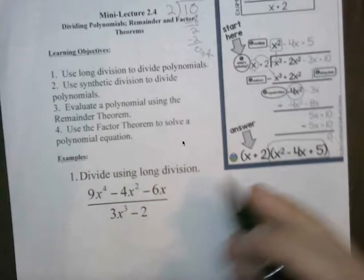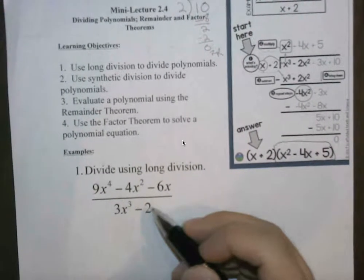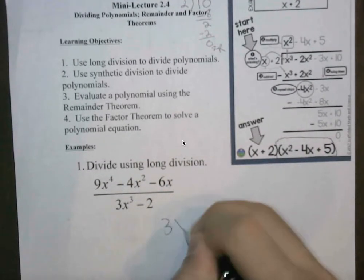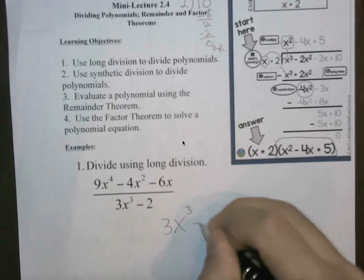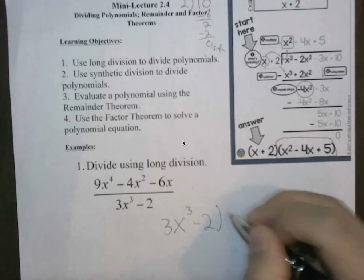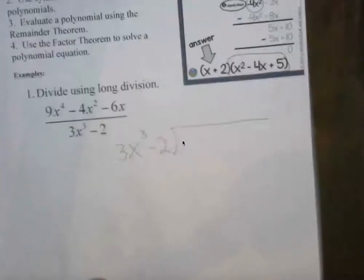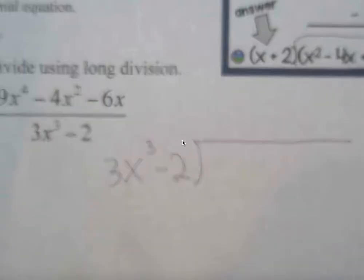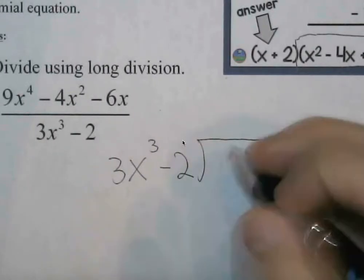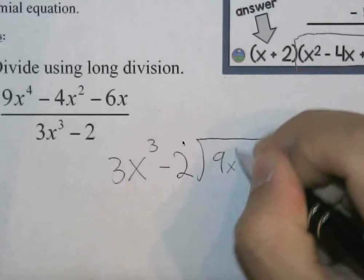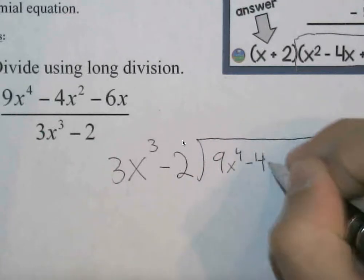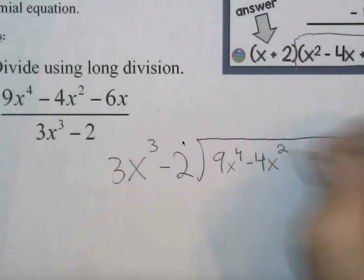So we'll do the same thing here. In our denominator we have 3x cubed minus 2. I'm going to write that outside of this bracket. Inside here I'm going to write my numerator polynomial, which in this case is 9x to the fourth minus 4x squared minus 6x.